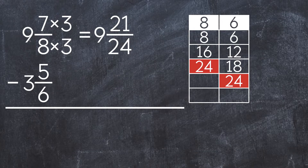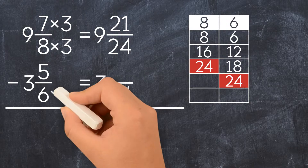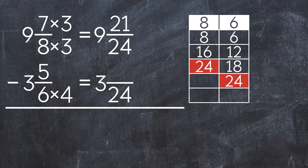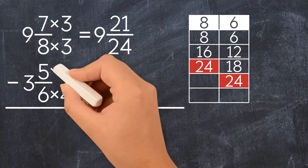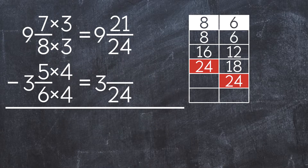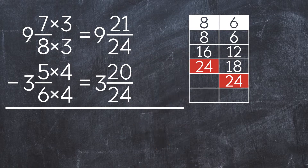Let's do the same to the second mixed number. What do we multiply 6 by to get 24? 4. We also have to multiply the numerator by 4. So the new mixed number is 3 and 20 twenty-fourths.